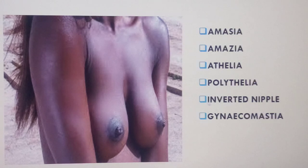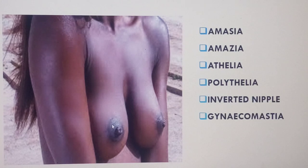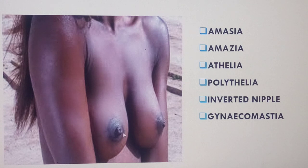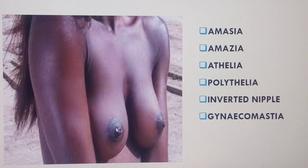The inverted nipple is different from athelia. Athelia is absence of the nipple, but an inverted nipple is when the nipple is present but sunken in. An inverted nipple is one of the classic signs of breast cancer. People with breast cancer may have an inverted nipple, and on self breast examination you may experience a painless hard lump in the breast.